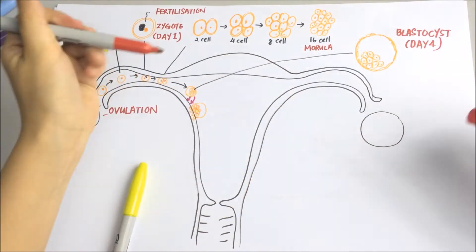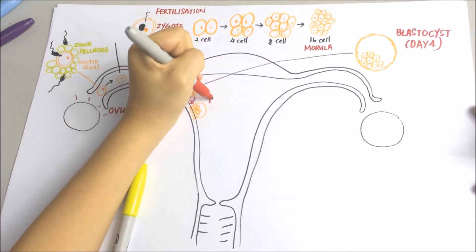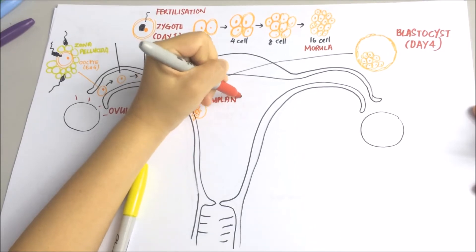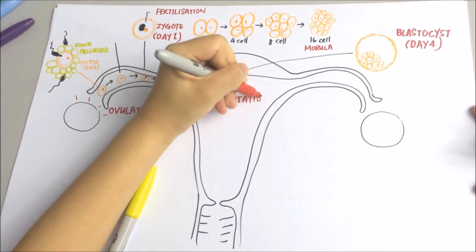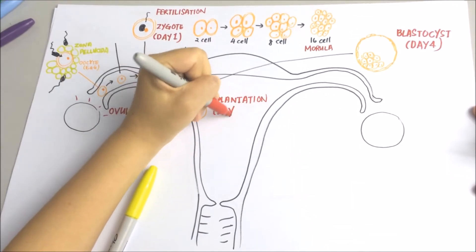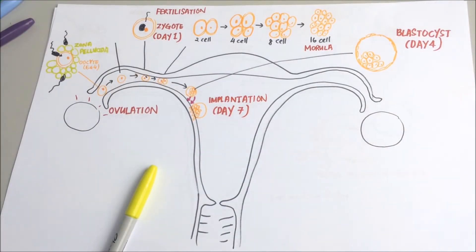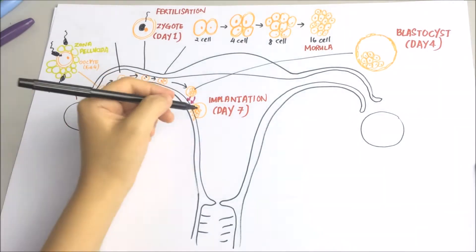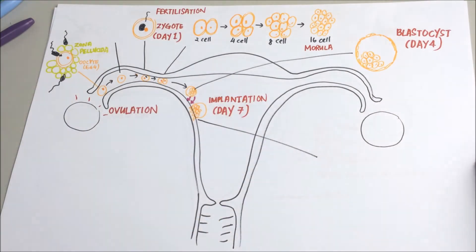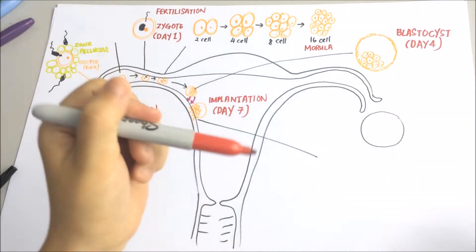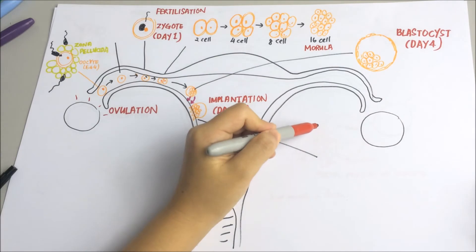Implantation usually happens around day seven. Implantation simply means that the embryo will eventually attach itself to the uterine wall. The blastocyst with its inner cell mass becomes firmly embedded in the endometrium.